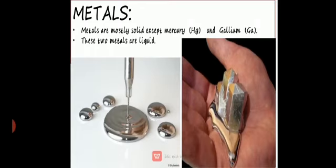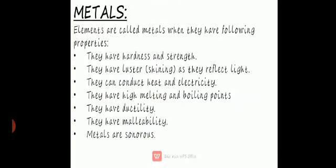Elements are called metals when they have the following properties: they are hard and have strength and cannot be molded easily. They have luster — a shiny surface that reflects light. They can conduct heat and electricity. They have high melting and boiling points, meaning it is difficult to melt or boil them easily. They have ductility, meaning they can be drawn into wires.